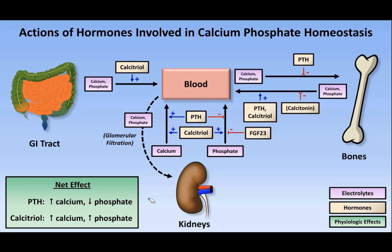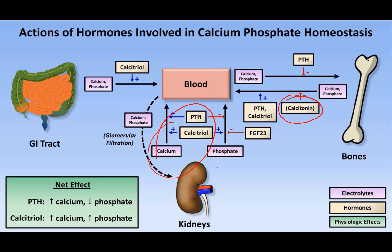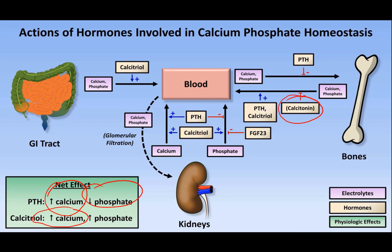From the intestine, vitamin D facilitates calcium and phosphate absorption into the bone. Parathyroid hormone and vitamin D drive osteoclastic resorption, releasing calcium and phosphate back into the blood, while calcitonin prevents this resorption. In the kidney, calcium is reabsorbed by both parathyroid hormone and calcitriol, while phosphate reabsorption is only aided by calcitriol; fibroblast growth factor inhibits phosphate absorption. Net effect: parathyroid hormone increases calcium and decreases phosphate; calcitriol increases both.